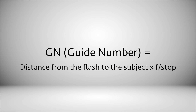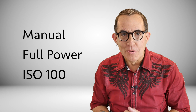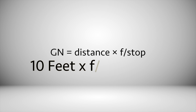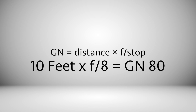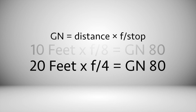The way to calculate a flash's guide number is to multiply the distance times the f-stop, based on a manual setting at full power and an ISO of 100. For example, if your flash is 10 feet from your subject and you need an aperture of f8 to get a properly exposed image, the flash's guide number is 80. If you are using the same flash at 20 feet, the guide number is still 80 but your exposure will change to f4.